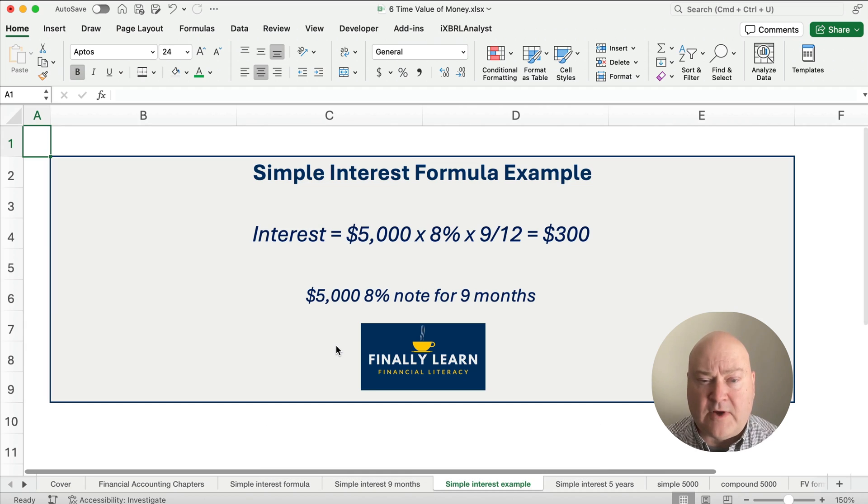Let's think of it a different way. Interest is principal times rate times time or I equals PRT. Here we have 5,000 times 8% times 9 twelfths. We have a $300 interest that we've earned, and this is a $5,000 8% note for 9 months. We did the formula. That's a good way to remember that.